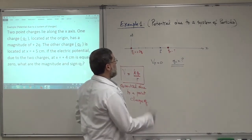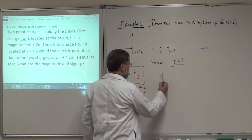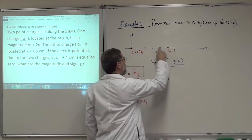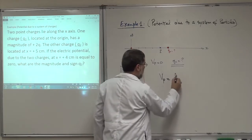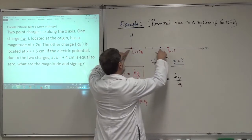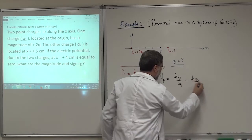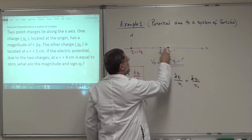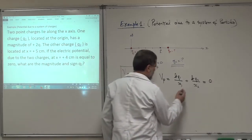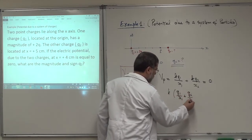Let's apply this here. We have a system of two particles. The potential at point P due to the two charges will be the potential of charge Q1 plus the potential of charge Q2. The potential of Q1 is KQ1 over X1. The distance X1 will be 4 centimeters. Plus KQ2 over X2. The distance X2 is 1 centimeter. And this is equal to zero.